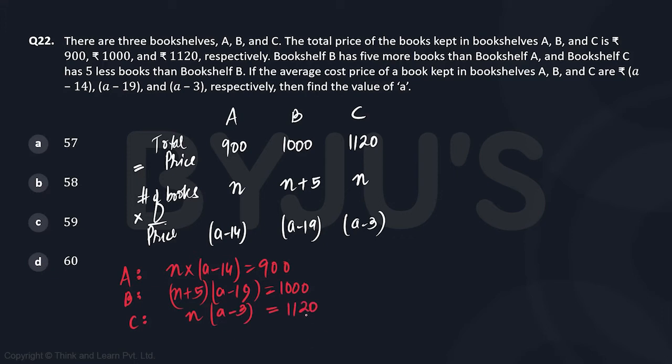So we need to find out the value of a. The easiest way to find the value of a would be taking the first and the last equation and dividing, because then n will cancel out. So bookshelf B is not important here.